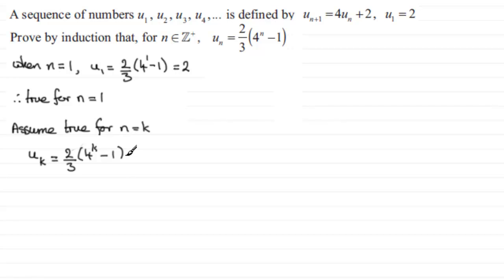So, we now have to prove that on this basis that it's true for n equals k plus 1. So, if we look at the term u_{k+1}, what's it going to be? Well, we can draw on this recurrence relationship here. Because if n is equal to k, u_{k+1} must be equal to 4u_k plus 2. So, I'll just write that in here, 4u_k plus 2.